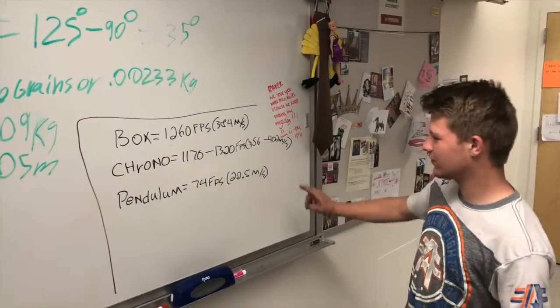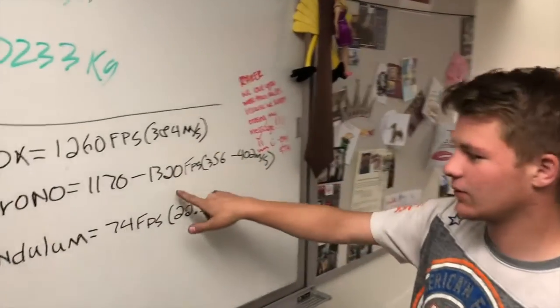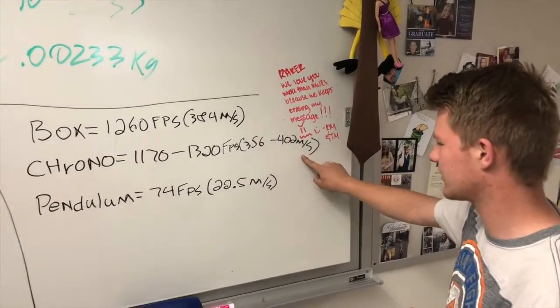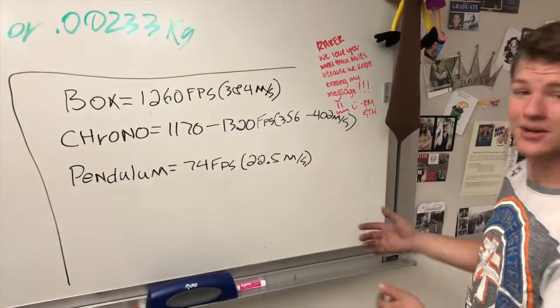So what we learned from this information: this is what we got from the box, 384 meters per second. What we got from a chronograph, 356 to 402 meters per second. And then what we calculated from the pendulum is 22.5 meters per second.